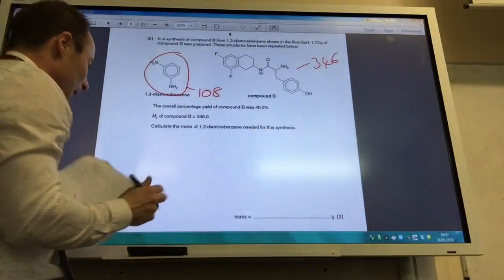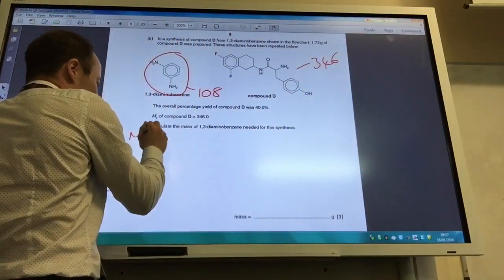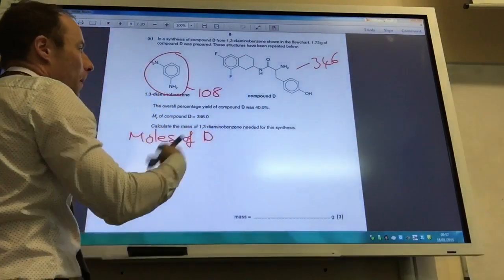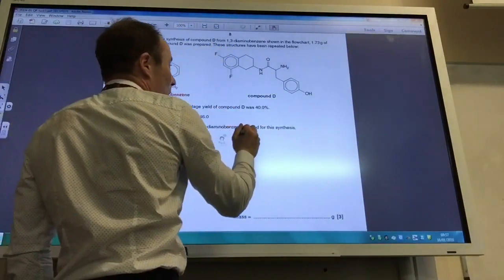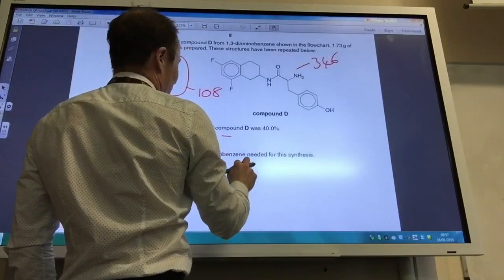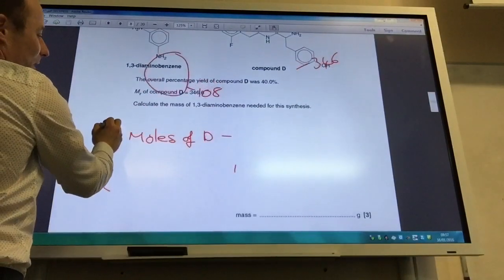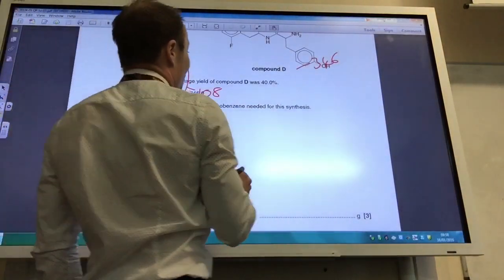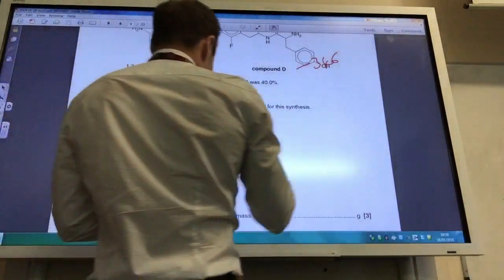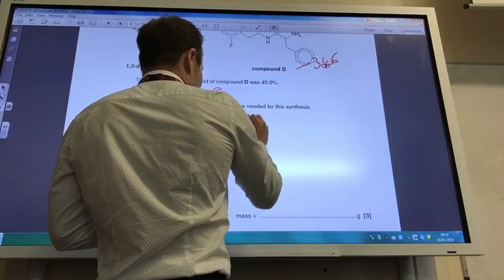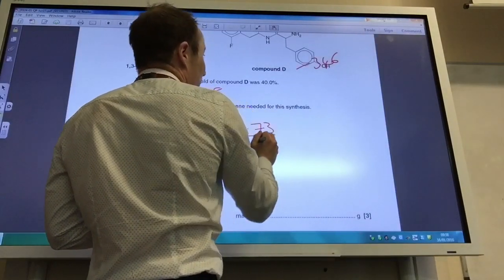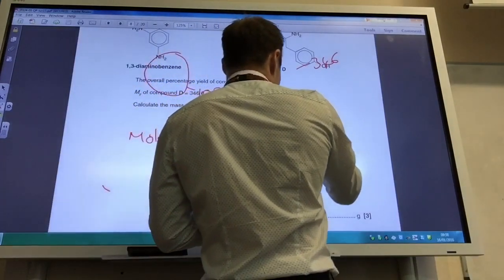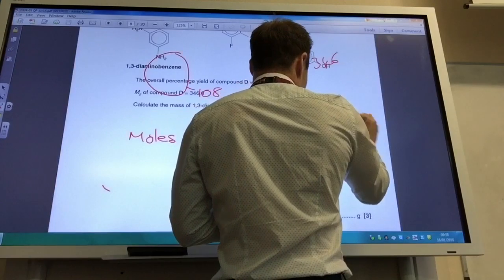Obviously the first thing you do is calculate the moles of D because they've given you a mass and the molar mass. So moles of D is going to be 1.73 grams divided by the molar mass, which is 346, which gives you 0.005 moles.